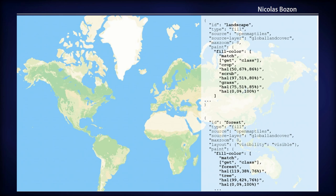You can see how the global land cover is mapped using only two layers. The landscape layer first assigns color to crop, scrub, or grass — and if it's none of them, it will be white for ice. Then a forest layer is overlaid on top showing just the forest and trees classes.